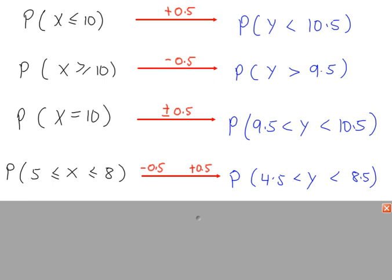You'll notice on the left hand side here, in the discrete distribution, we have an equal sign in every probability: less than or equal to. It doesn't say less than, it says less than or equal to.